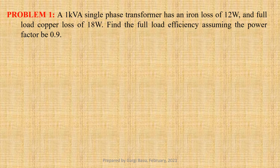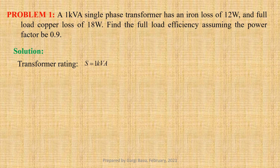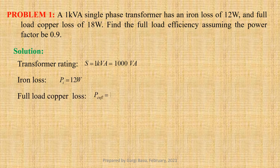Problem number 1. A 1 kVA single phase transformer has an iron loss of 12 watt and full load copper loss of 18 watt. We have to find the full load efficiency assuming the power factor be 0.9. Let us first jot down the given data: transformer rating S equals to 1 kVA, that is equal to 1000 VA; iron loss P_I equals to 12 watt; full load copper loss P_copper_FL equals to 18 watt; power factor cos phi 2 equals to 0.9.